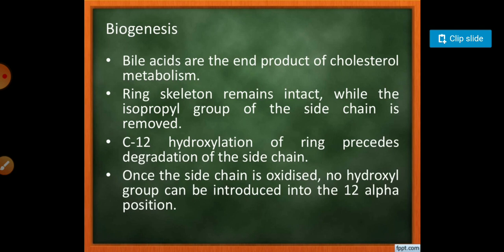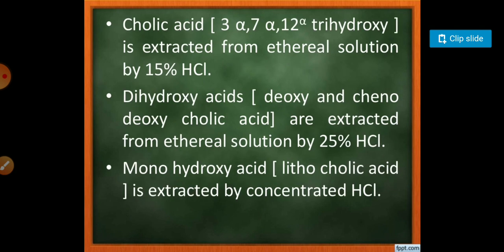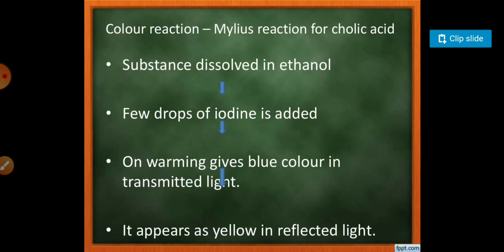The isolation of bile acid involves hydrolyzing the peptide linkage with alkali. From the solution, free bile acids have been isolated either by crystallization from organic solvents or by treating ethereal solutions of acids with various concentrations of HCl. Cholic acid with 3-alpha, 7-alpha, and 12-alpha trihydroxyl can be isolated with 15% HCl solution, dihydroxy acids with 25% HCl, and monohydroxy acids with concentrated HCl.